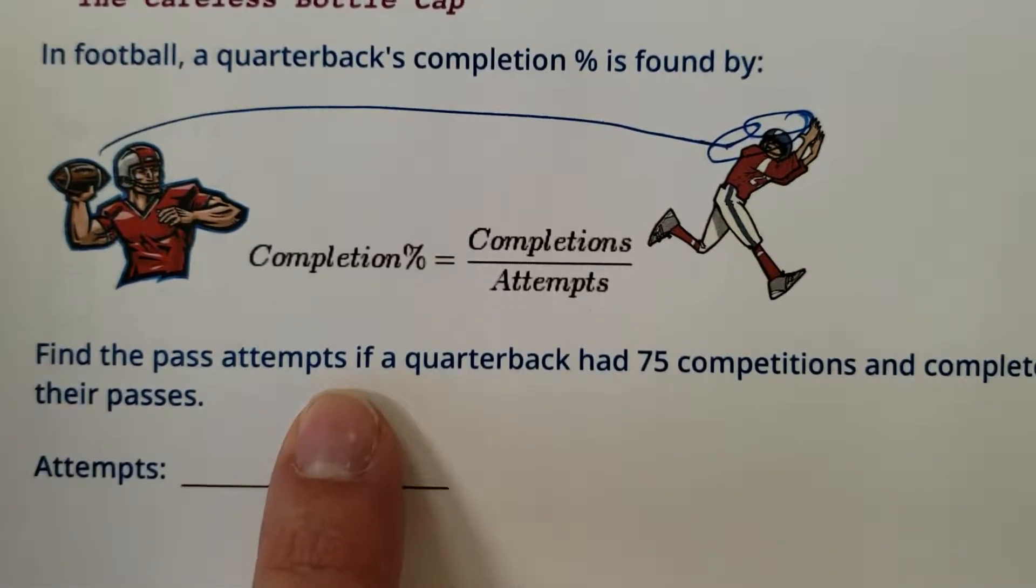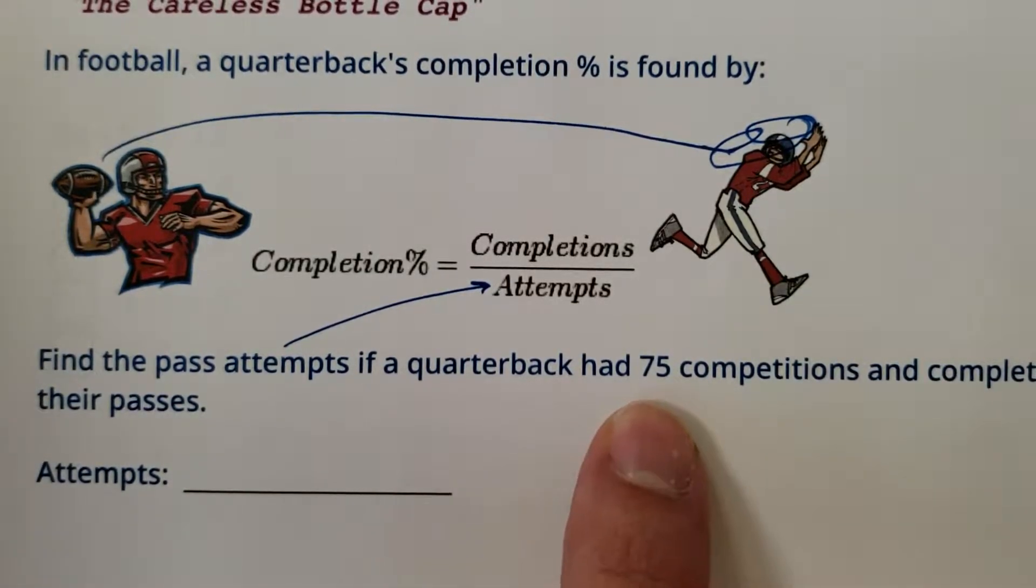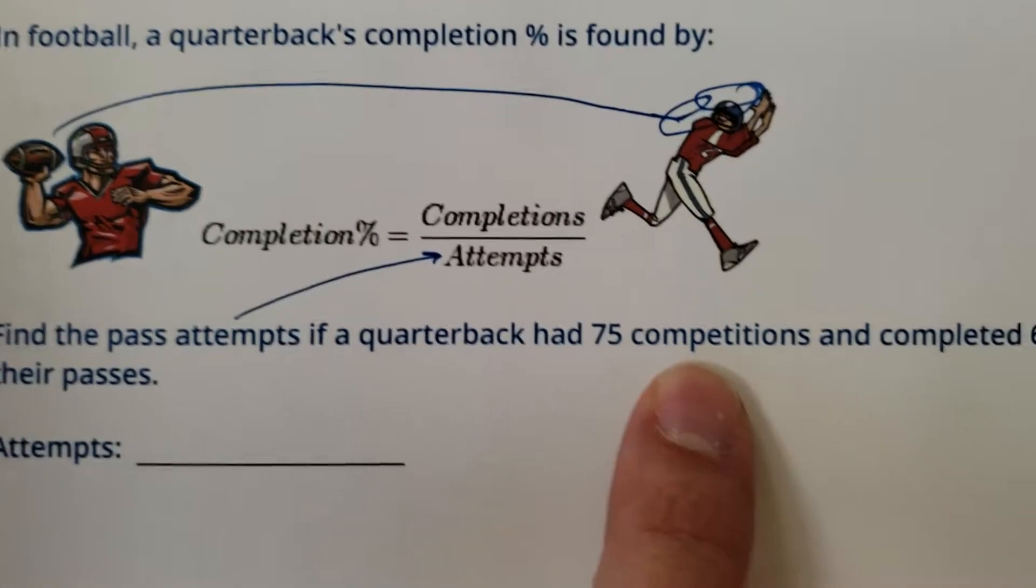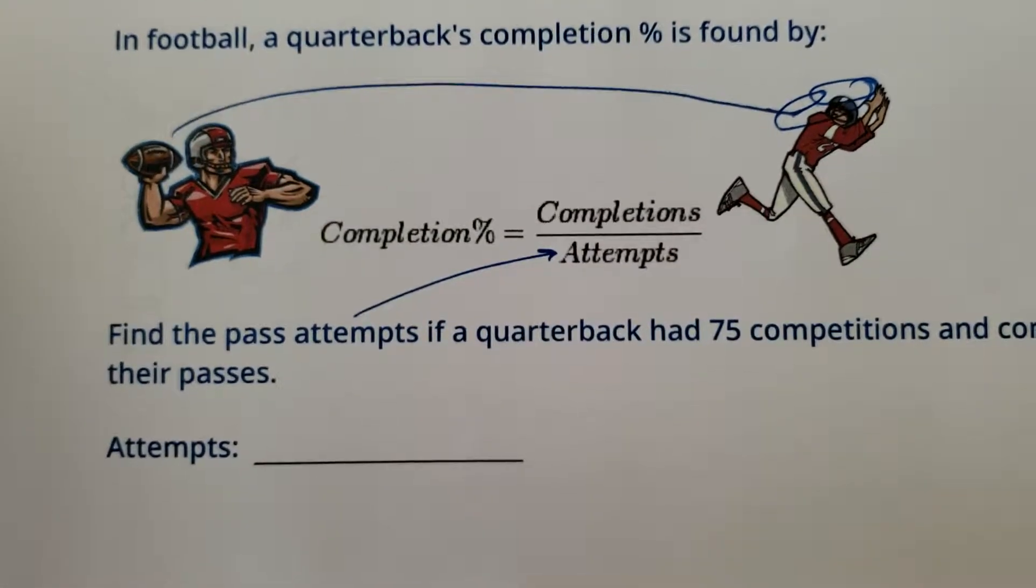So what do we got here? Find the pass attempts. Oh, so we're missing the attempts. If a quarterback had 75 completions and completed 60.5% of their passes.